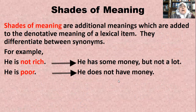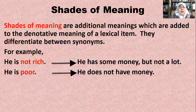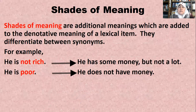Meanings have shades. Shades of meaning are additional meanings added to the denotative meaning of a lexical item, and they differentiate between synonyms. For example, 'he is not rich' and 'he is poor' are synonyms, but there are differences: 'not rich' means he has some money but not a lot, whereas 'poor' means he doesn't have any money. These shades of meaning are essential in translation — they change your translation a great deal. Thank you.